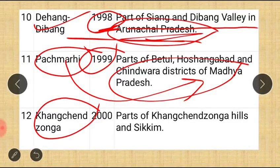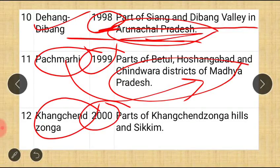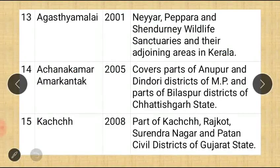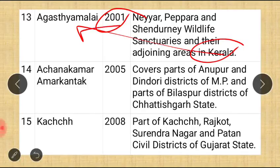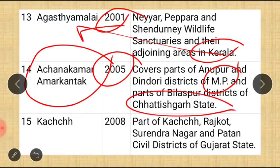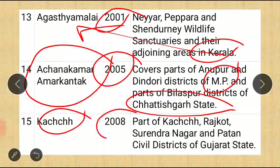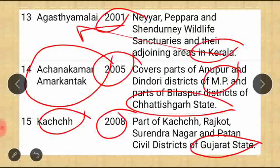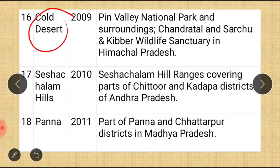The twelfth is Kanchenjunga (also called Khangchendzonga in the native language of Sikkim), notified in 2000, part of the Kanchenjunga Hills of Sikkim. The thirteenth is Agasthyamalai, 2001, covering Neyyar, Peppara, and Shendurney Wildlife Sanctuaries and their adjoining areas in Kerala. The fourteenth is Achanakmar-Amarkantak, 2005, covering parts of Anuppur and Dindori Districts of Madhya Pradesh and parts of Bilaspur District of Chhattisgarh — it spans both MP and Chhattisgarh, since Chhattisgarh was carved out of Madhya Pradesh in the year 2000.